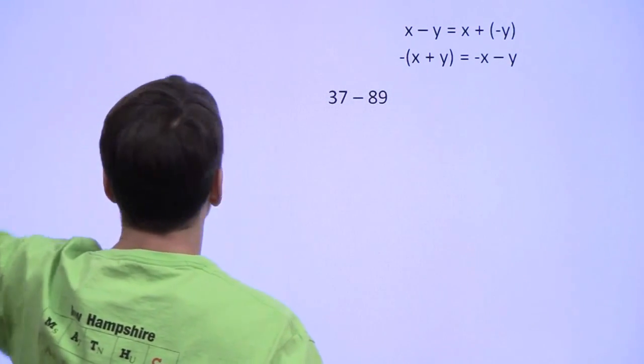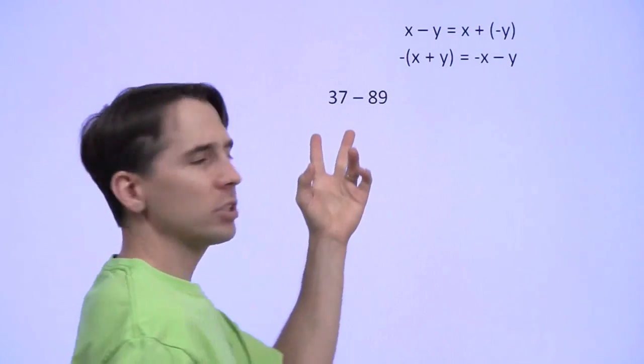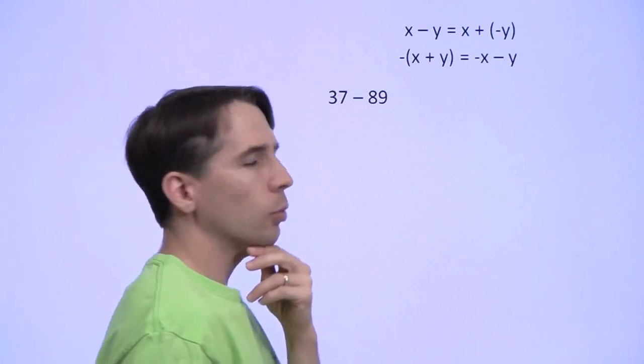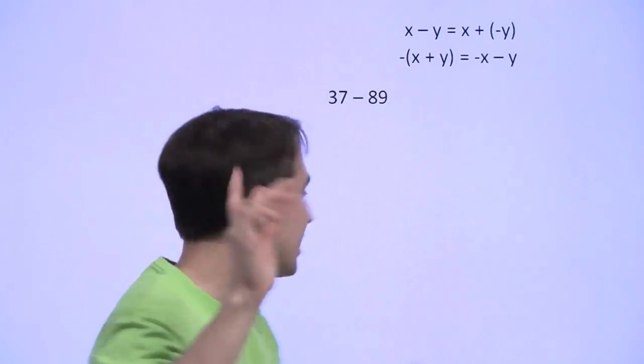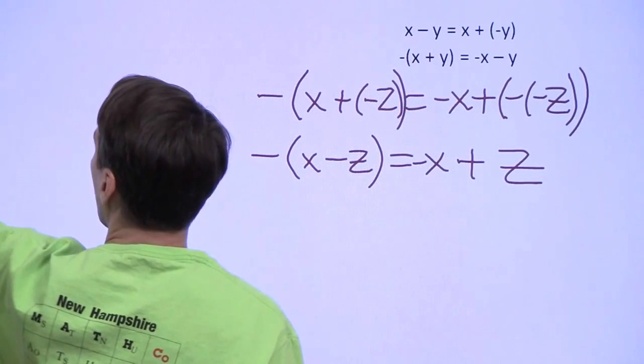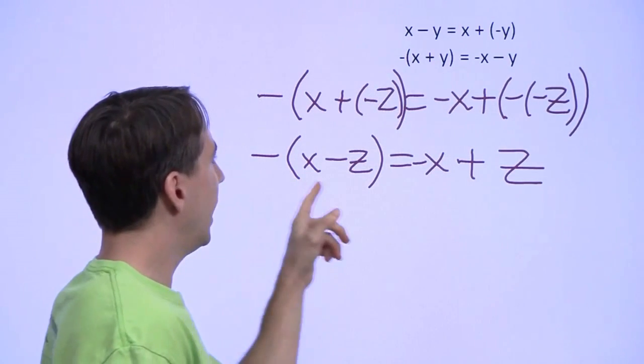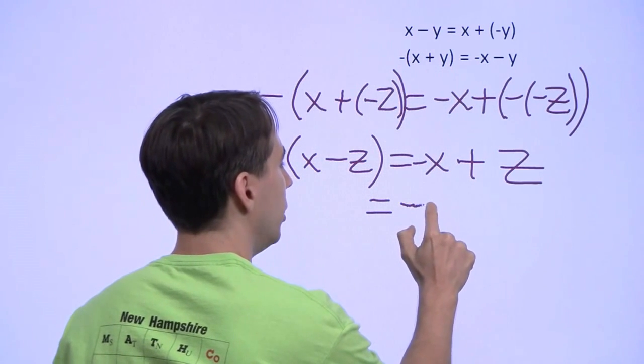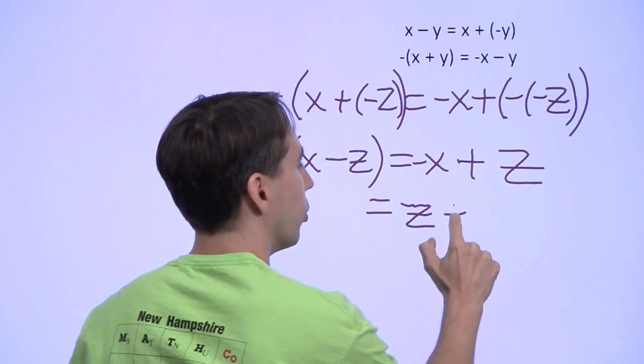On to the last problem. Oh, this one looks a little trickier. It doesn't really look like either one of those. Wait a second. Check this out. We're going to go back here and look at this right here. I can use the commutative property to reverse the order.